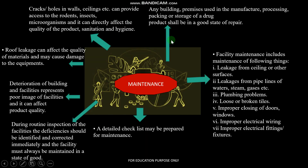Regarding maintenance: any building or premises used in the manufacture, processing, packaging, and storage of drugs shall be maintained in a good state of repair. If repair is needed, it should be done continuously. Cracks and holes in the wall or ceiling can provide access to rodents and insects, which will cause contamination. The entire building must be maintained; roofs should be leak-proof. Deterioration of building facilities affects product quality, so contamination can occur if the building deteriorates. Everything must be maintained and detail-checked to ensure it is properly kept.